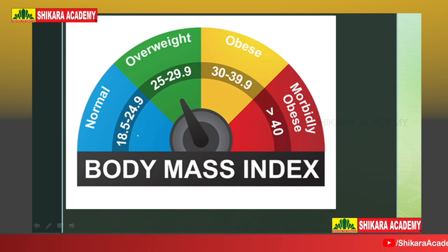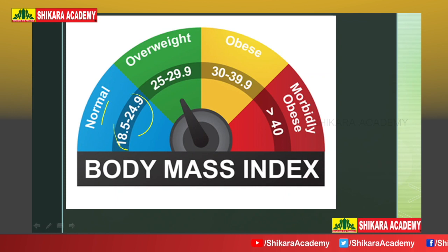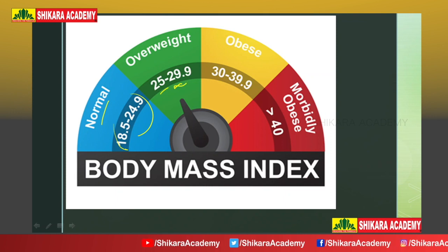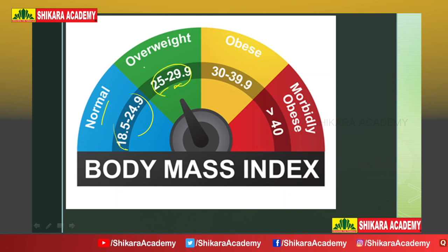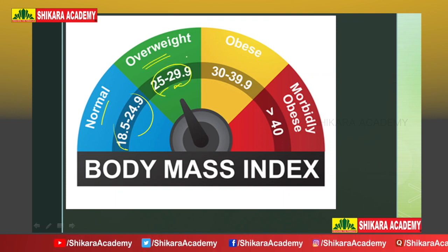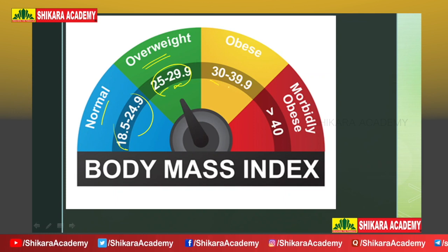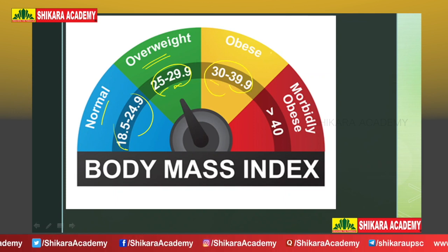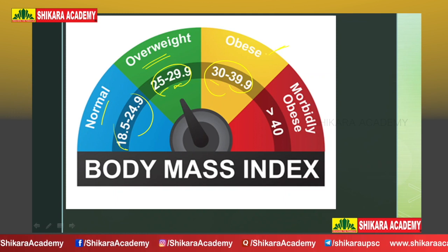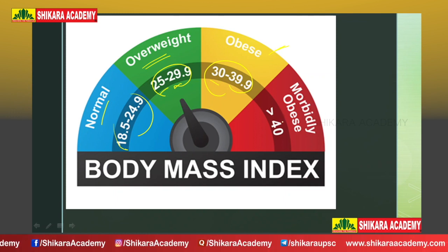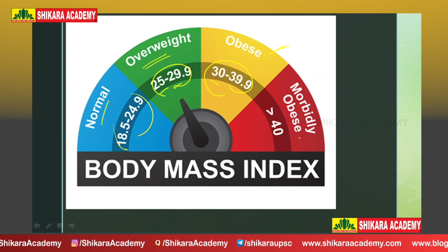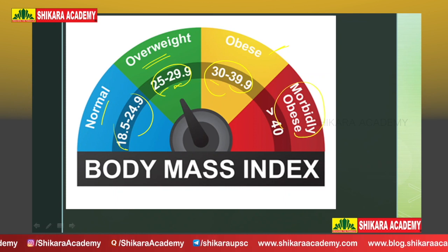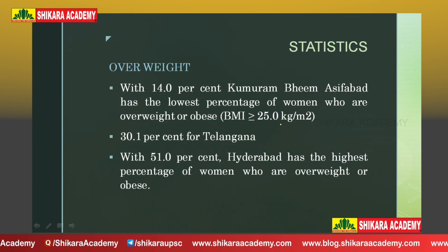If BMI is between 18.5 to 24.9, the person is considered normal. If BMI is above 25 and between 25 to 29.9, that person is called overweight. If BMI crosses 40, that person is considered morbidly obese.